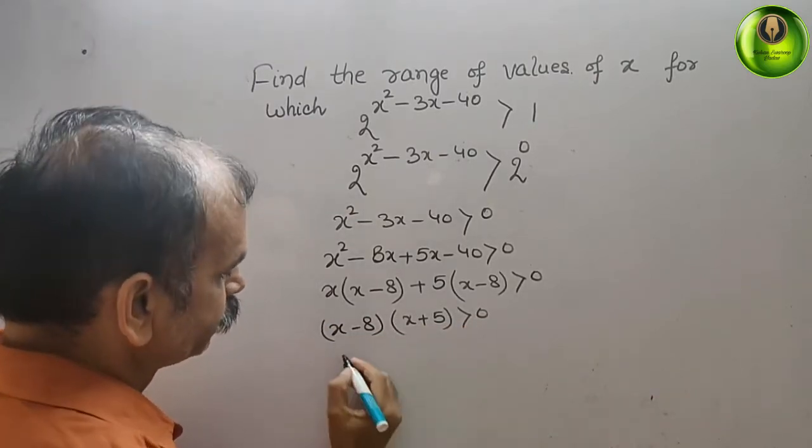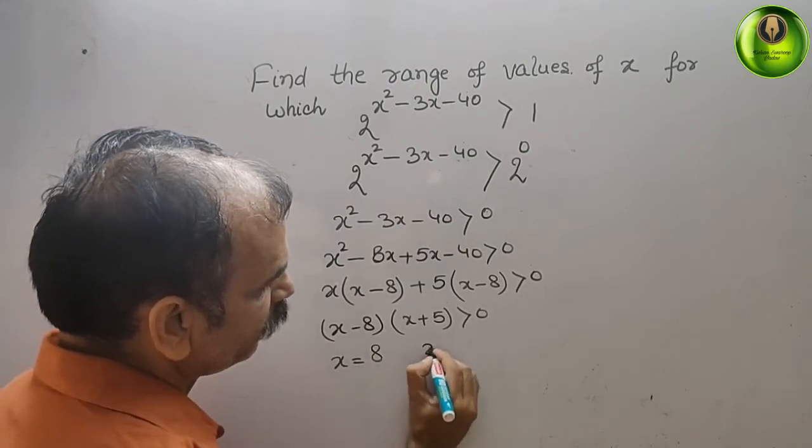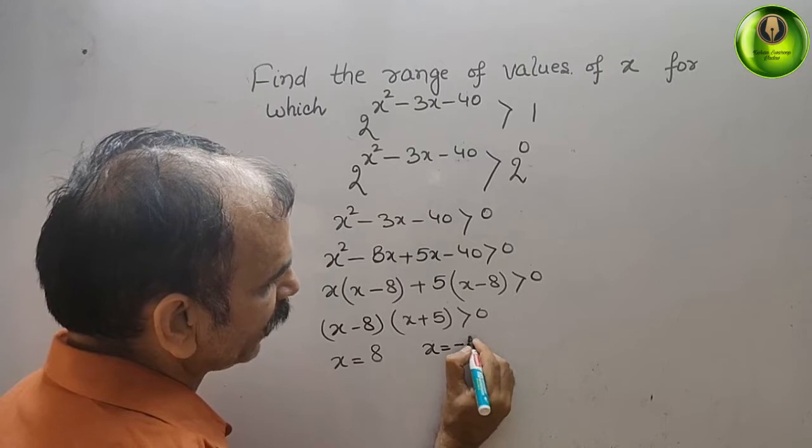Solve this. x is greater than 0. So x is equal to, we can say it is 8, and here you will get x is equal to minus 5.